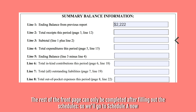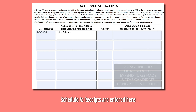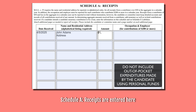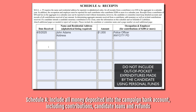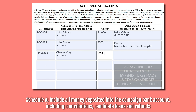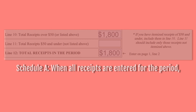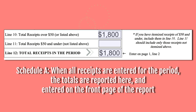The rest of the front page can only be completed after filling out the schedules, so we'll go to Schedule A now. Schedule A is where receipts are entered. Include all money deposited into the campaign bank account, including contributions, candidate loans, and refunds. When all receipts are entered for the period, the totals are reported here and entered on the front page of the report.